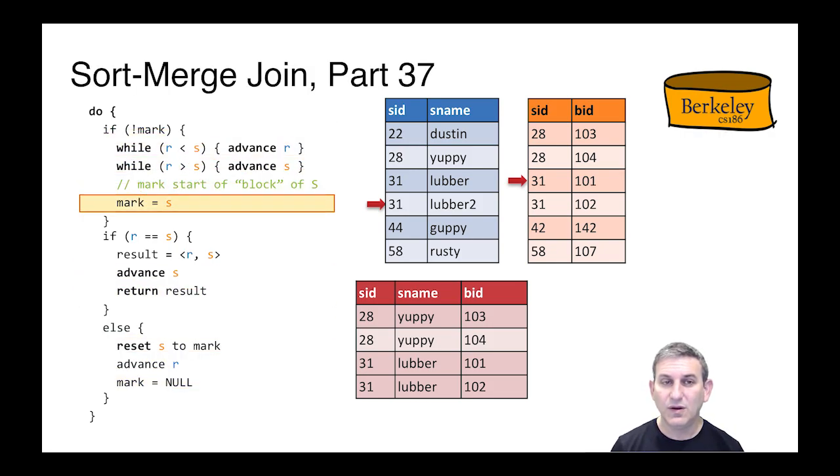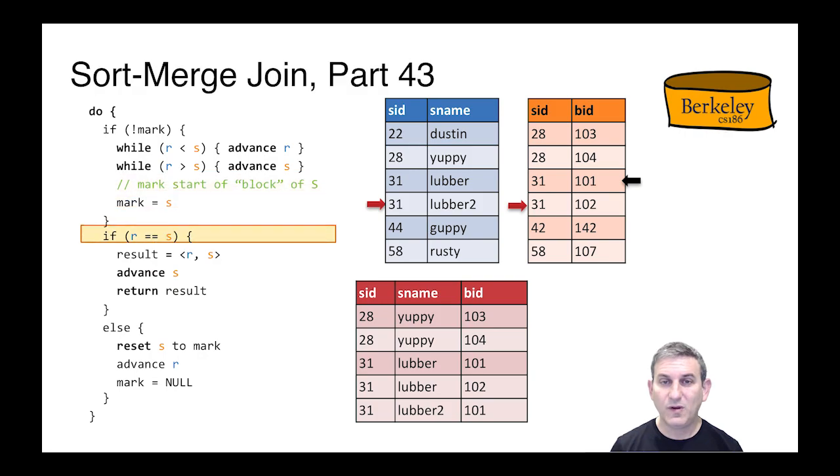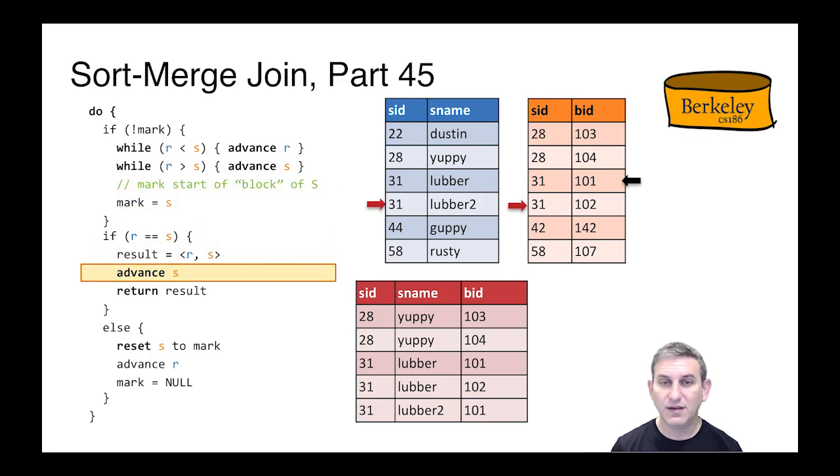So we set the mark to null. We go back to the top of the loop. We say if not mark. We check to see if R is less than S, S is less than R. They're not. So we set the mark. And again, we start emitting outputs. This time for the left hand tuple lubber2. When we get called back around, we've got yet another match. So we do the right thing here, advancing S off the end, returning the result.